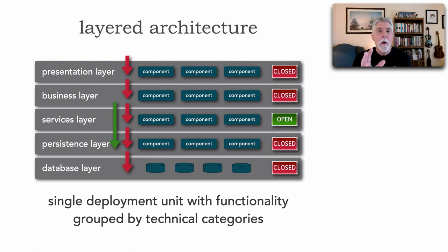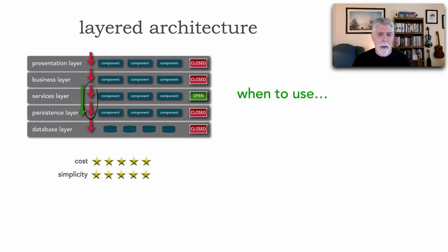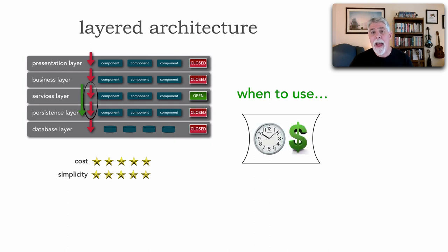The layered architecture has a couple of superpowers: primarily cost and simplicity. I'm going to leverage the star ratings that Neil Ford and I did in our book Fundamentals of Software Architecture, where one star means that capability or architectural characteristic is not well suited versus five stars which means it's very well suited for this architecture. This is a fairly inexpensive architecture, good to use when we have budget and time constraints because it is so cheap and so familiar.